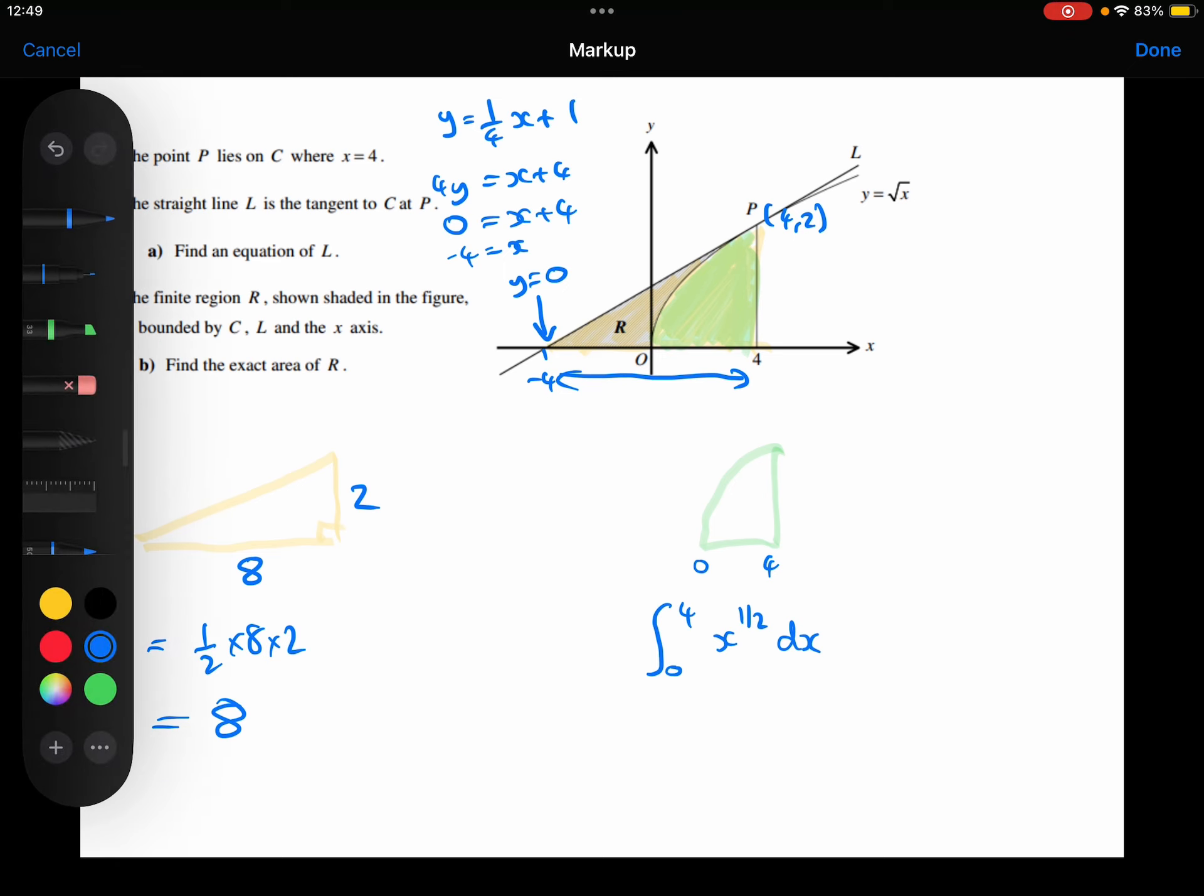So add 1 to the power, divide by the new power. Substitute the 4 in, and then substitute the 0 in, and take them away.